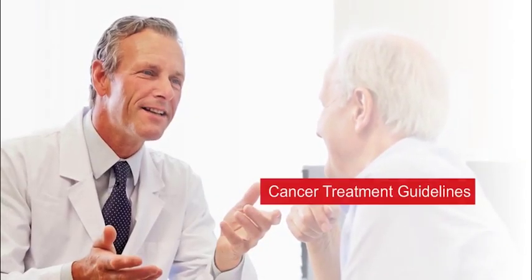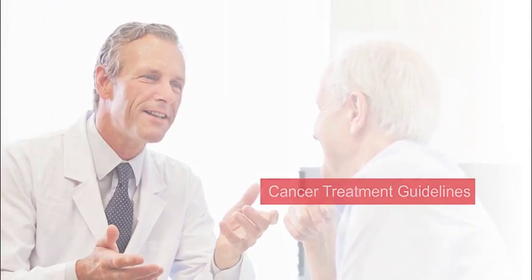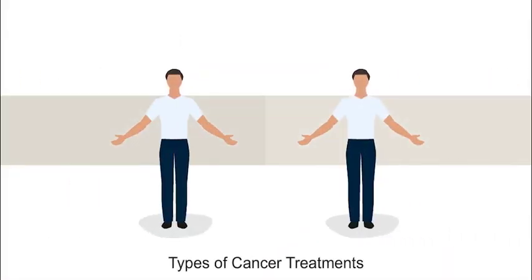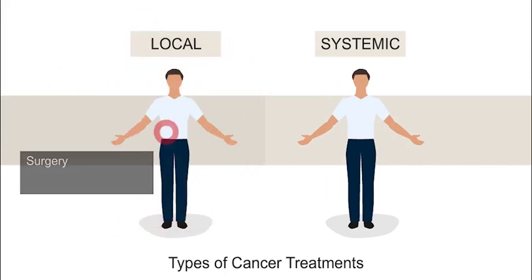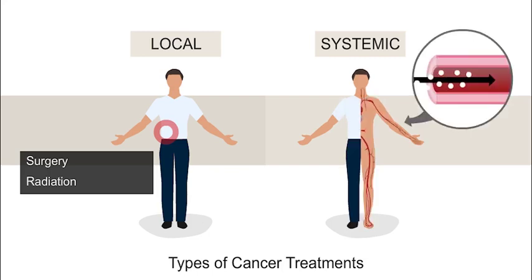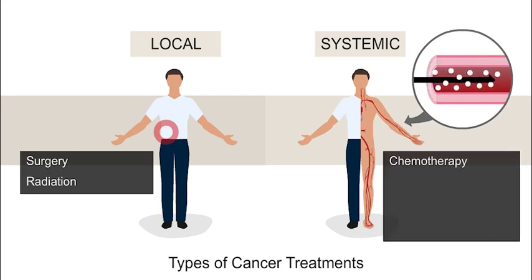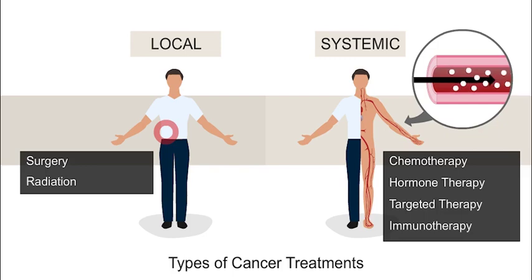This unit of Cancer Ed Online focuses on cancer treatment guidelines. There are two main types of cancer treatments: local and systemic. Local treatments are used at the tumor site and include surgery and radiation. Systemic treatments can kill or slow the growth of cancer cells throughout the body, and include chemotherapy, hormone therapy, targeted therapy, and immunotherapy.